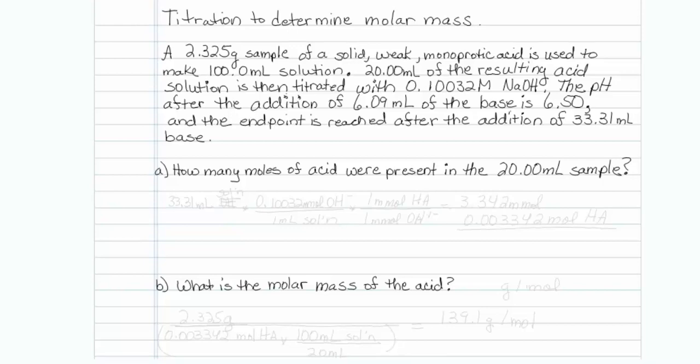This is how to use titration to determine molar mass. A 2.325 gram sample of a solid weak monoprotic acid is used to make 100 mils of solution, but we don't titrate all of it. We take 20 mils of the resulting acid solution and titrate that with 0.10032 molar NaOH. The pH after the addition of 6.09 mil of the base is 6.50, and the endpoint is reached after the addition of 33.31 mils base.